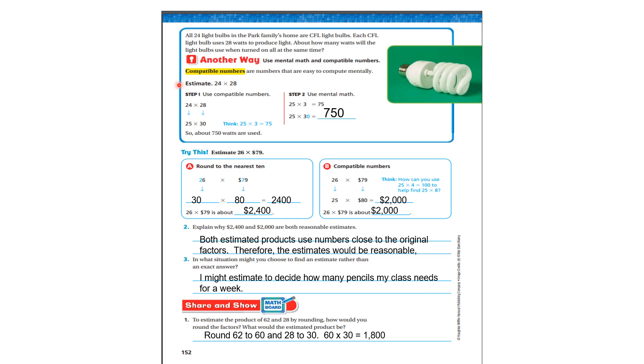Estimate 24 times 28. Use compatible numbers. 24 is compatible to 25. 28 is compatible to 30. Now, boys and girls, compatible numbers usually end in 5 and 0 because they're easy to multiply mentally. So now I want you to think, what is 25 times 3? Take that 0 off. What is 25 times 3? It's 75. Add that 0 and we have 750. So about 750 watts are used.